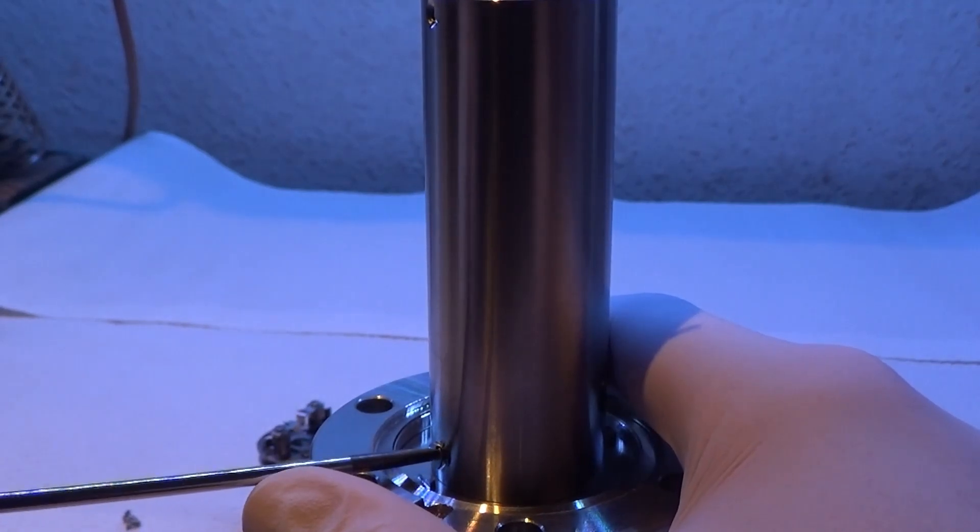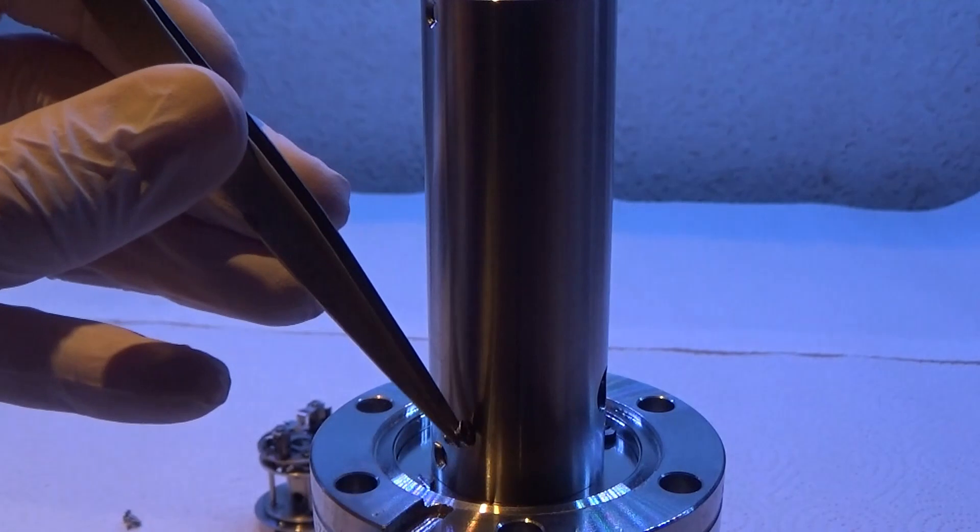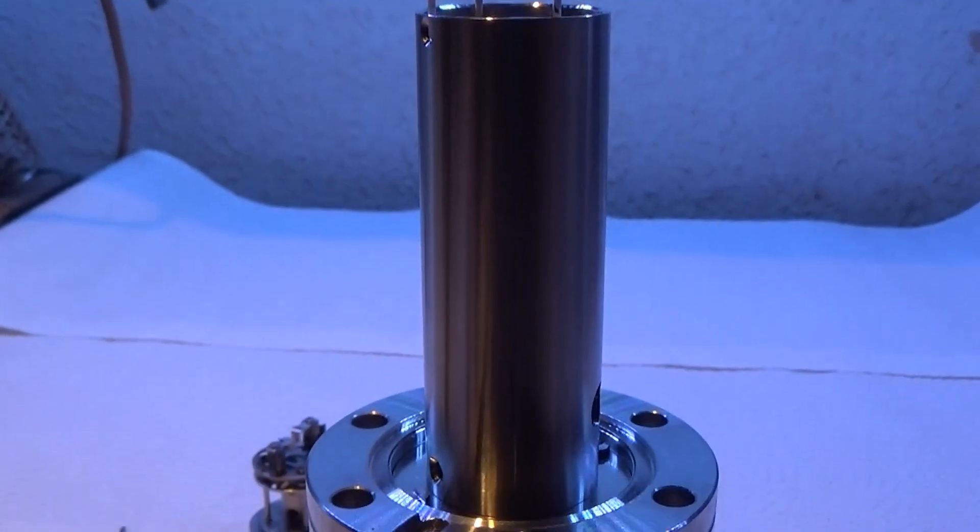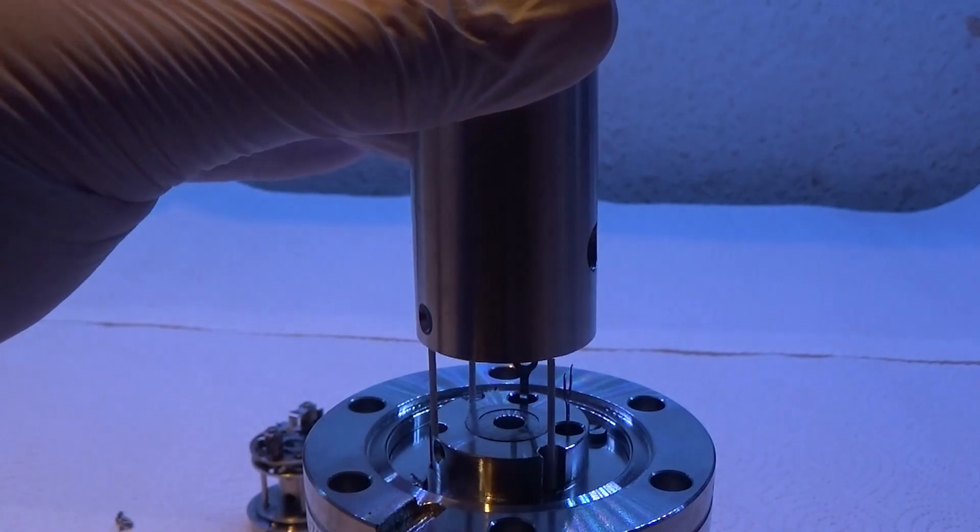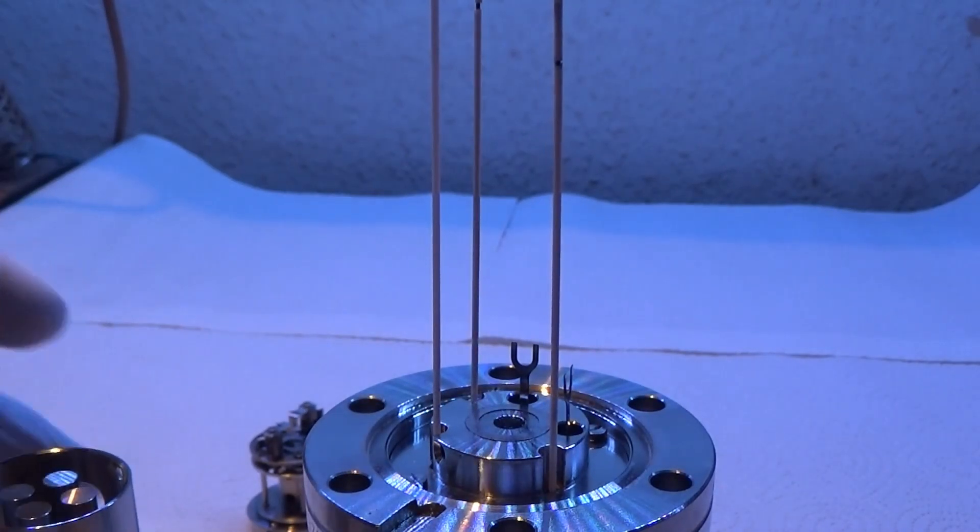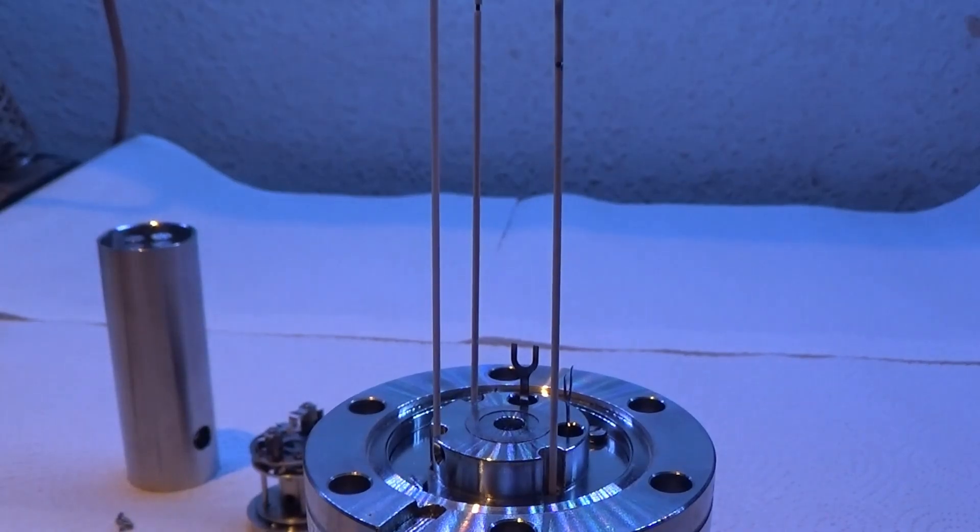So with the quadrupole, we can now both generate cations and impose conditions of what mass to charge ratio ions will go through the system. And now we need a way to detect those ions. And that's basically two ways of doing it. Either by counting the ions individually with a particle detector, like a scintillation counter or channel electron multiplier, or we can count the current with something much simpler, which is exactly what we're doing here.